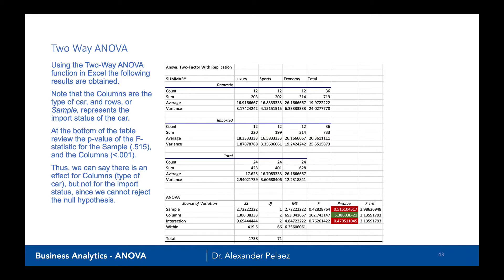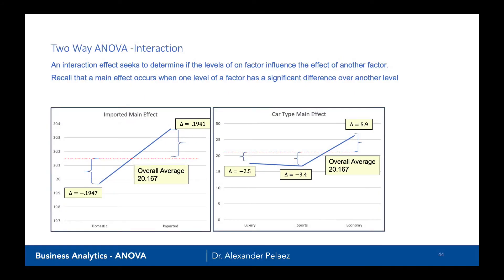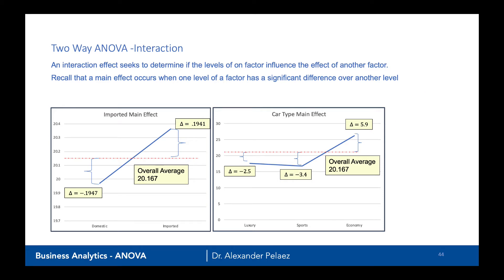Now we have what's called an interaction effect. Using the same null and alternative hypotheses, we check whether it's significant — here it is not, because the p-value is greater than 0.05. Looking at the charts: from domestic to imported the line goes up, with a delta of 0.194 for imported and negative 0.194 for domestic. For car type, the deltas range from negative 2.5 to 5.9 against an overall average of 20.167. Be careful when looking at graphs, because they can be deceiving.